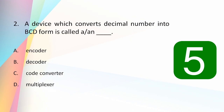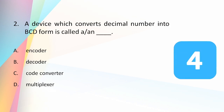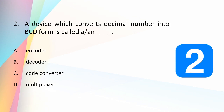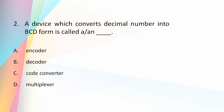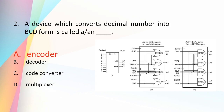A device which converts a decimal number into BCD form is called: an encoder, decoder, code converter, or multiplexer? The answer is an encoder. So from decimal to some other coded form, we use an encoder. An encoder is a combinational circuit which has many inputs and many outputs, and it is used to convert other codes to binary.